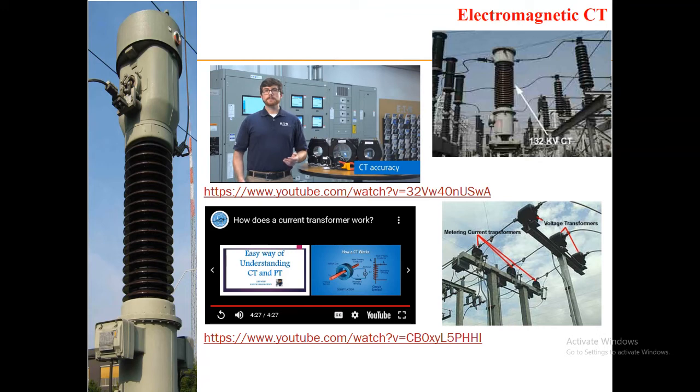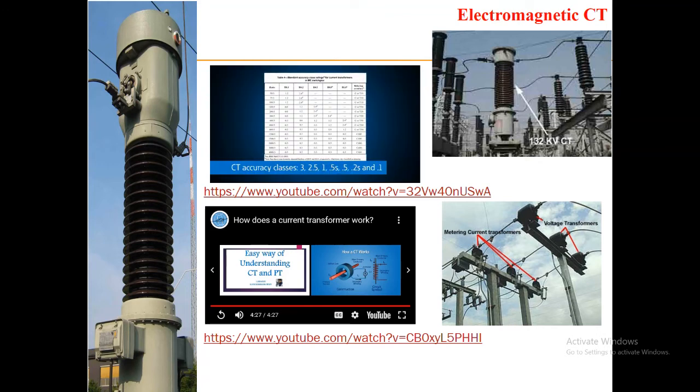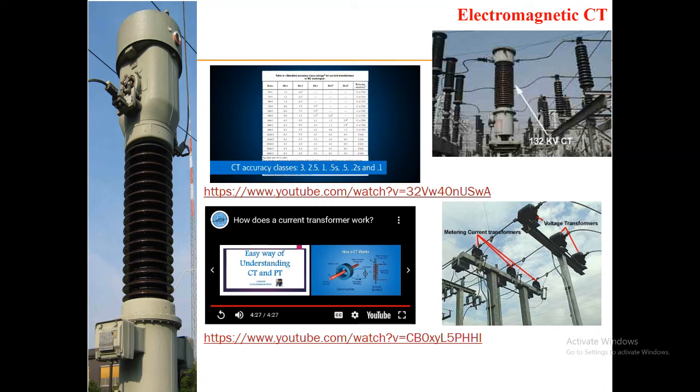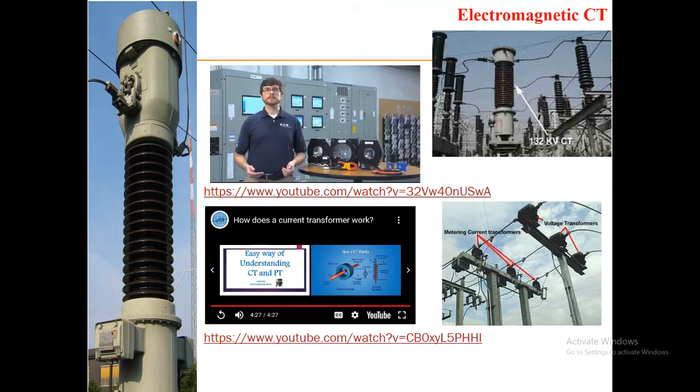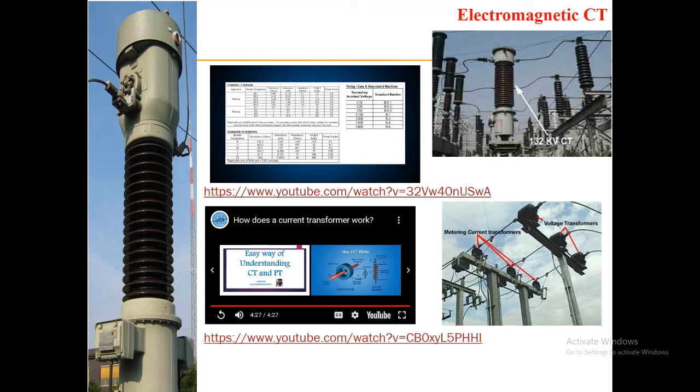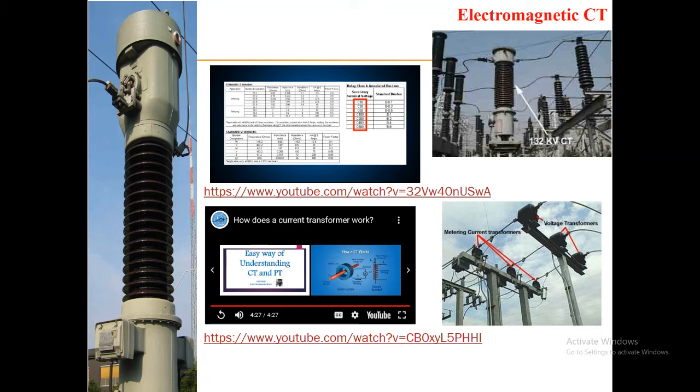Sometimes the current value is too small. A CT may not be accurate at less than 10% of its full load rating. So one way to increase the amount of current flowing through the core, especially for temporary metering, is to loop the primary wire several times through the core. For example, for a 500 to 5 amp CT or 100 to 1 ratio, looping the wire 5 times through the core will make the CT ratio 100 to 5 amps. So if 20 amps of current is flowing on the primary circuit, instead of 0.2 amps, one amp of current will flow on the secondary, making the measurement more accurate.